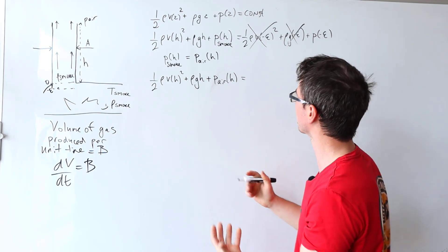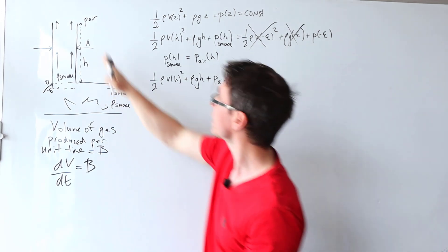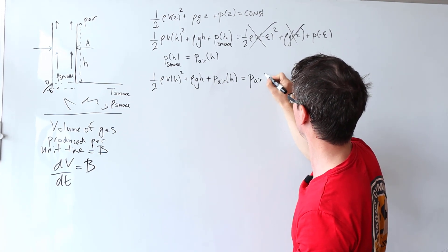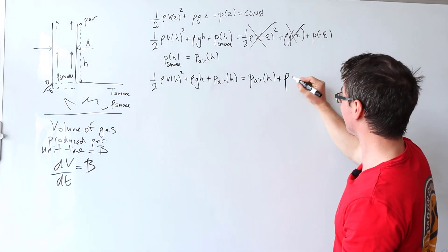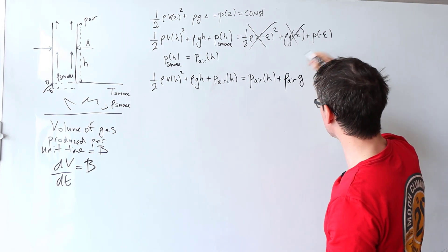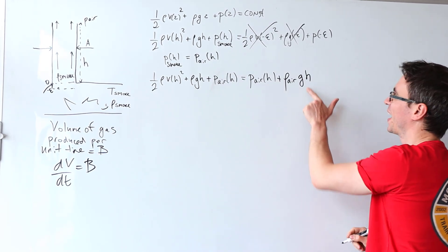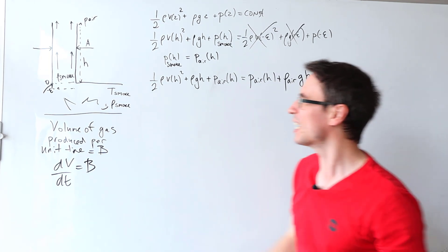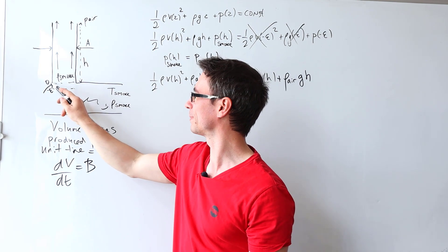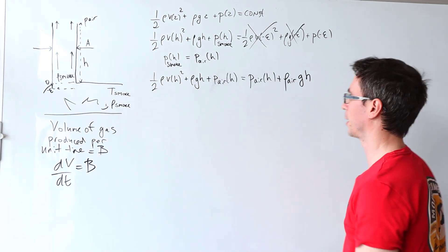Now what is the air pressure at this level? Well, due to hydrostatic equilibrium, this will be greater than the pressure here, so that's going to be p of air times h plus the density of the air multiplied by g multiplied by the height h. Once again, I'm just assuming that there's no significant pressure variation if I go from here to here because this is just a tiny number.